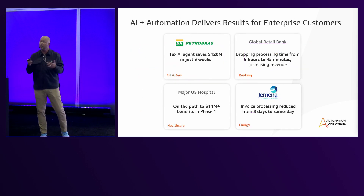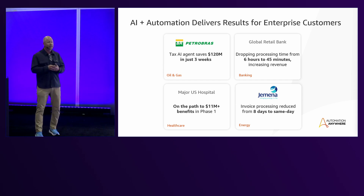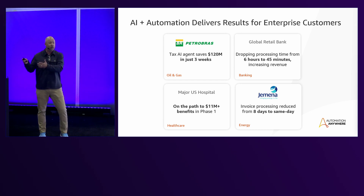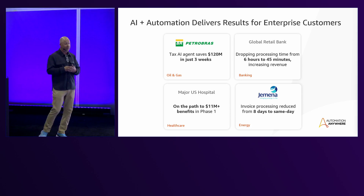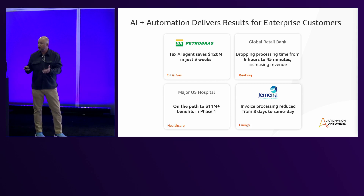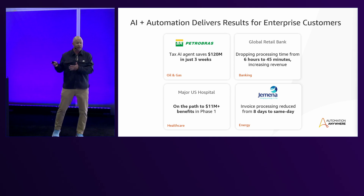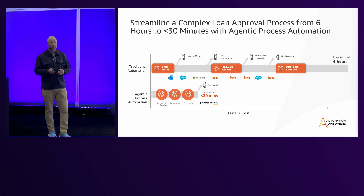And the results are impressive. Here are a number of customers where we're delivering agentic process automation. The Petrobras use case is incredible — $120 million in savings in just three weeks. This was a tax use case where the automation was understanding very complex tax rules. Another global retail bank, PNC Bank, dropped their processing time for applications from six hours to 45 minutes. A major U.S. hospital, Boston Children's Hospital, is on path to realize $11 million in savings in phase one. And lastly, Gemina reduced their invoice processing time from eight days to the same day. I'm going to turn it over to Akshay, and he's going to walk you through a demo so you'll see how it actually works.